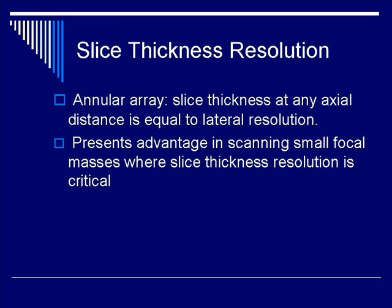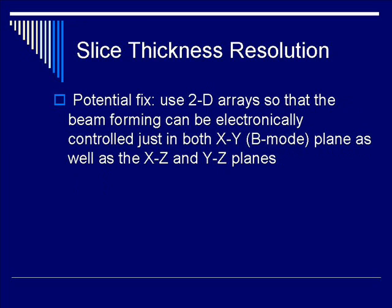Practically speaking, by employing an annular array, you are able to bypass the slice-thickness limitation, because by optimizing lateral resolution in the annular array, you optimize the slice-thickness resolution as well. Slice-thickness presents an advantage in scanning if you use an annular array, because it can resolve small focal masses. A potential fix to the slice-thickness problem is, instead of using a one-dimensional array, use a 2D array so that you can independently adjust both XY, XZ, and YZ planes.